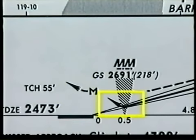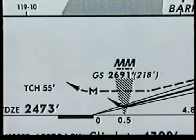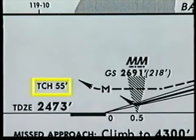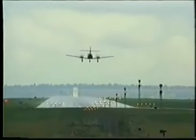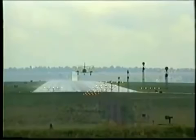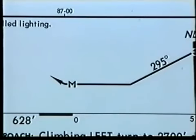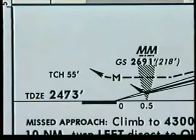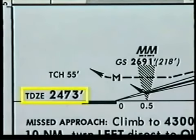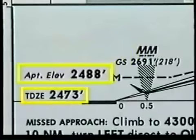The missed approach point for a precision approach is shown close to the middle marker where the solid line indicates climbing flight. Notice that the missed approach at the decision altitude does not indicate level flight, since you must make an immediate decision to continue the approach or execute a missed approach when you reach the DA. The threshold crossing height, or TCH, is listed to show the height above the runway threshold where your aircraft's glide slope antenna will be if you maintain the ILS glide path to touchdown. A threshold crossing height is not shown on non-precision approaches. The touchdown zone elevation, or TDZE, is shown next to the runway symbol. This is the highest elevation in the first 3,000 feet of the landing surface. It may be lower than the airport elevation, which is the highest point of an airport's usable runways.